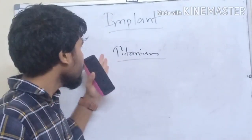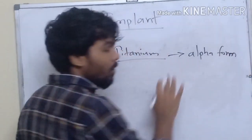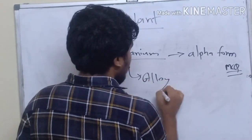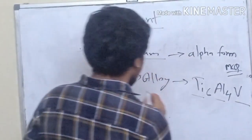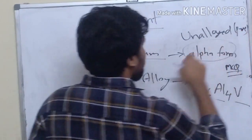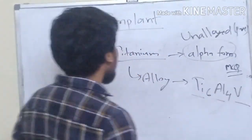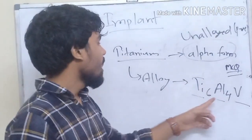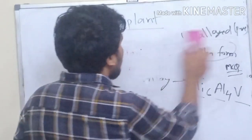Titanium is used in its alpha form when pure titanium is used under load conditions. When used in alloy form, it is combined with aluminum and vanadium. However, due to some disadvantages of aluminum and vanadium, newer components like tantalum and zirconium are used in newer implants.